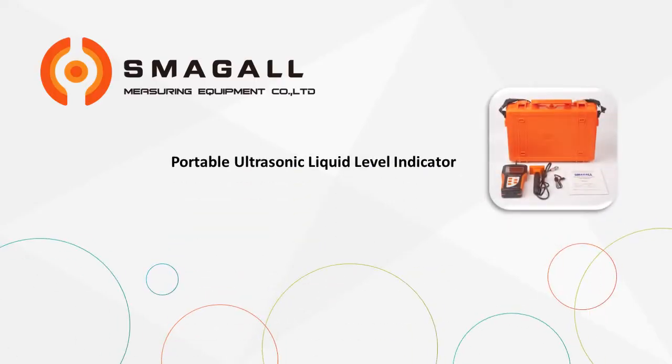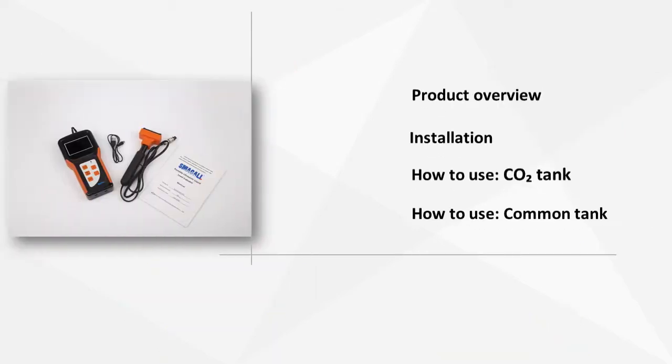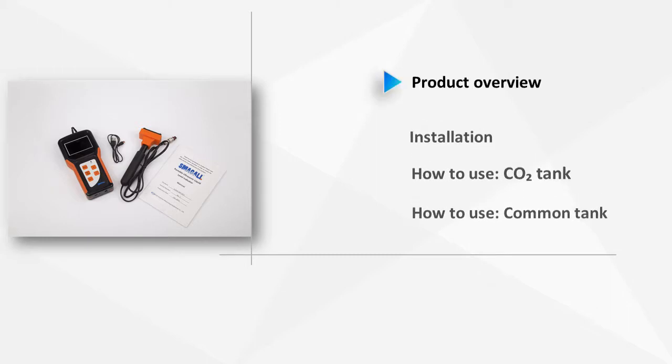Smagol Portable Ultrasonic Liquid Level Indicator is designed to measure the presence or absence of a liquid at a certain level in a container or in pipelines.